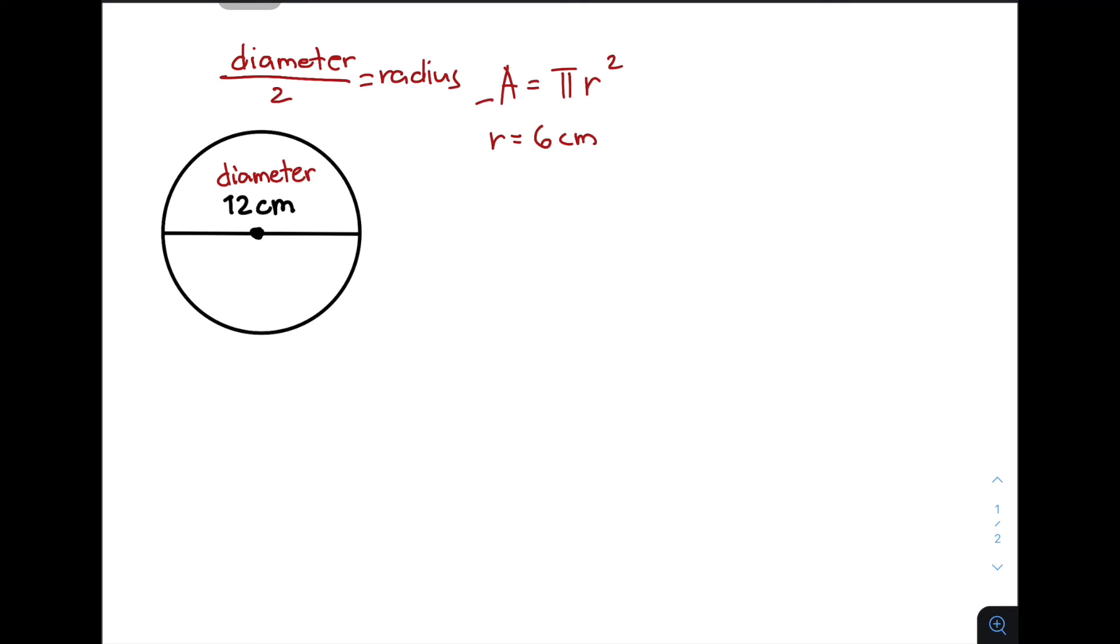Using this formula, we need to plug in the value of r. We have area is equal to pi times 6 centimeters squared. And we know that when we simplify this, this gives us 36 centimeters squared, so area equals 36 pi centimeters squared.